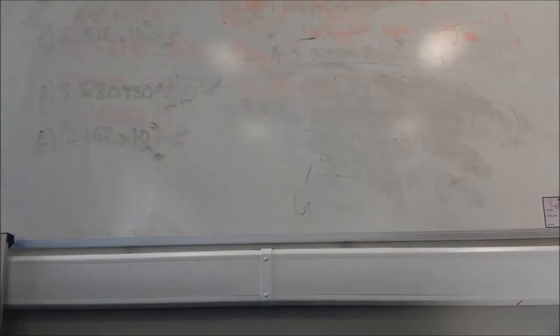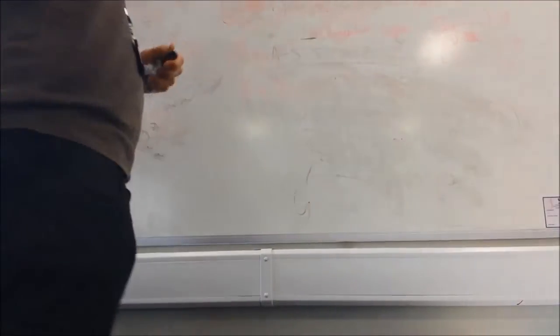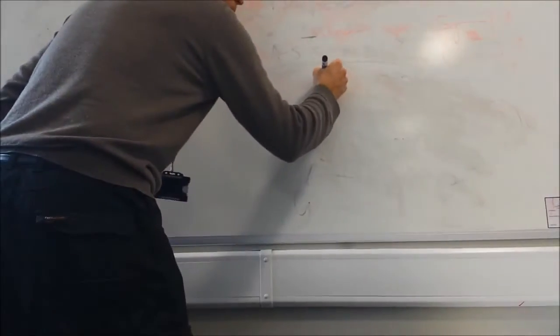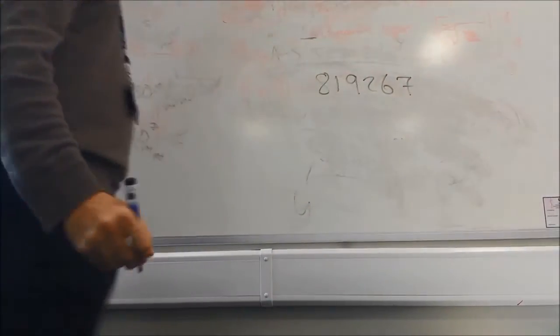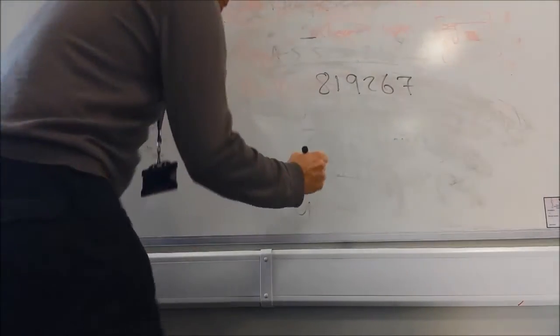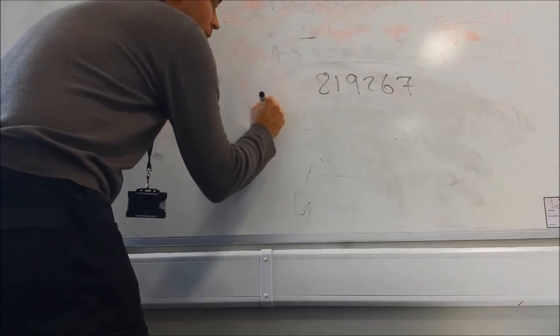Right, okay, we're going to look at standard form. For instance, 819267. Just putting that straight into standard form, it has to be between 1 and 10. So if I put a decimal point here, that will work, because it'll be 8.1 something. If I put it there, it'd be useless because it'd be 81.